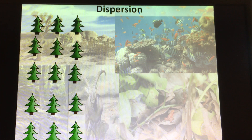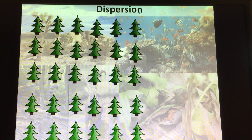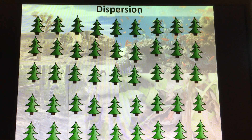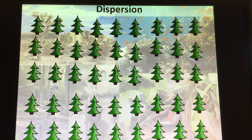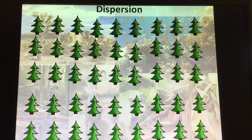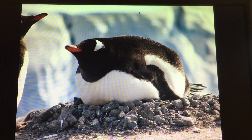We also have uniform dispersion, where organisms are all evenly spaced out. This is common in certain bird species like penguins, and in some plants. Generally you wouldn't see uniform dispersion in a coniferous forest unless it was a tree farm planted by humans. However, there are some plants that secrete chemicals to prevent or kill any other plants from growing next to them.